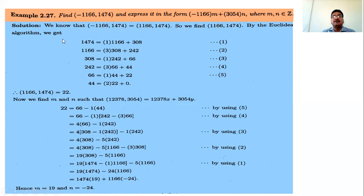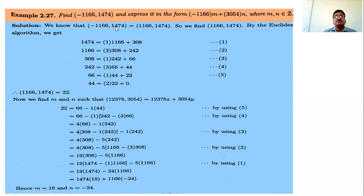This is because the GCD of minus 1166 and 1474, and double 1166 and 1474, are the same. If both numbers are negative, delete both negative signs and find the GCD of the positive integers, because the GCD of positive and negative numbers are the same.